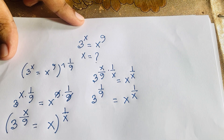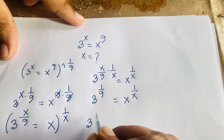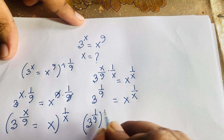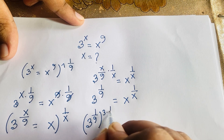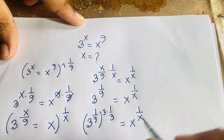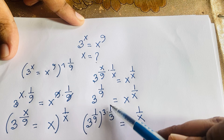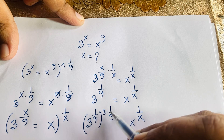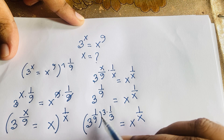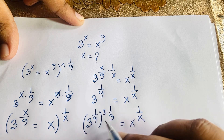Now I can rewrite 3 to the power 1 over 9. It will be 3 to the power 1 over 9, whole to the power 3 times 1 over 3, equal to x to the power 1 over x. The 3 to the power 3 gives us something useful — so 3 to the power 1 over 9, whole to the power 3, times 1 over 3, is equal to 3 to the power 1 over 9.